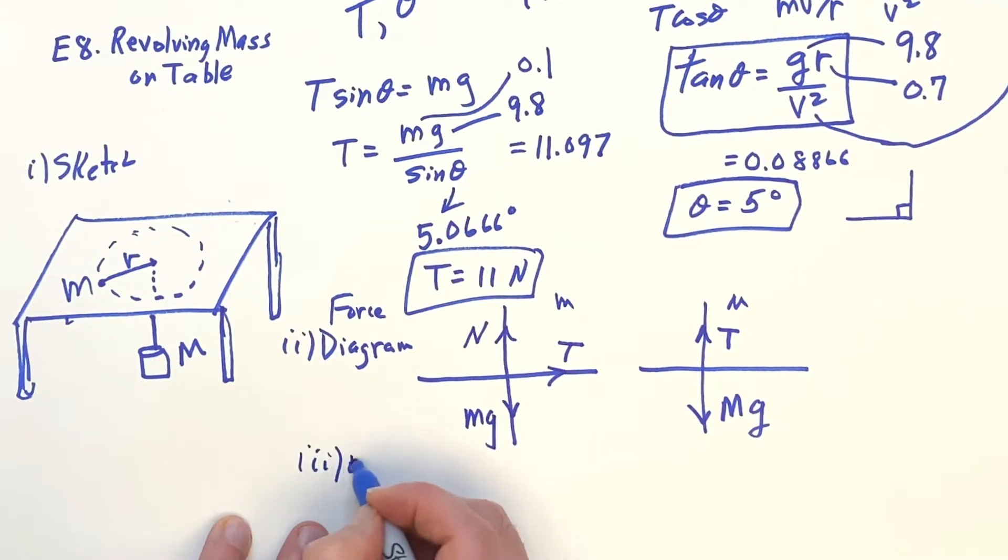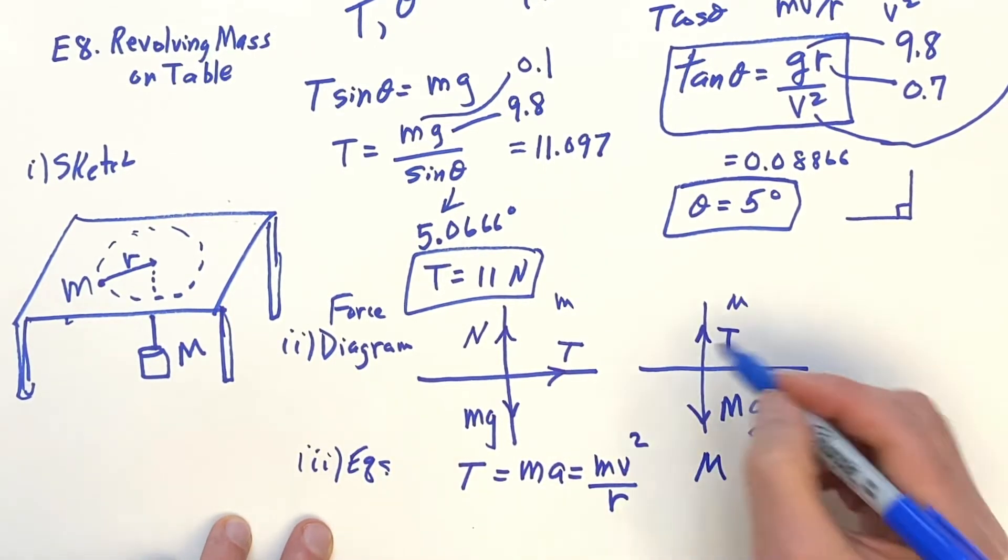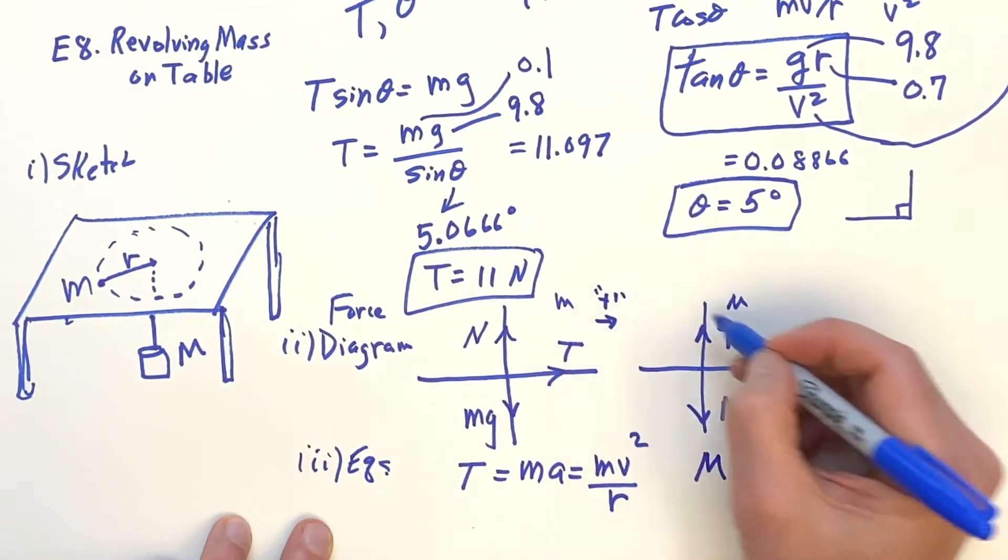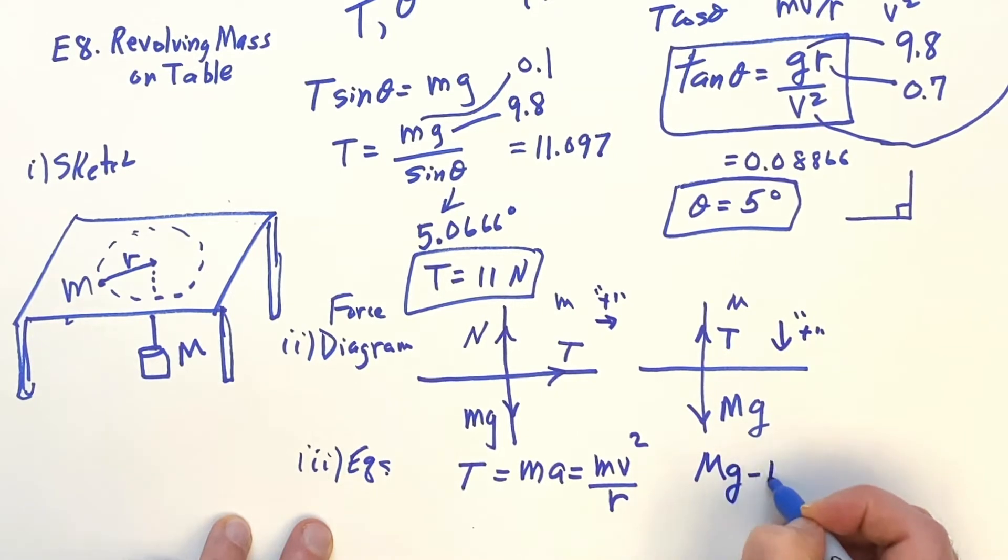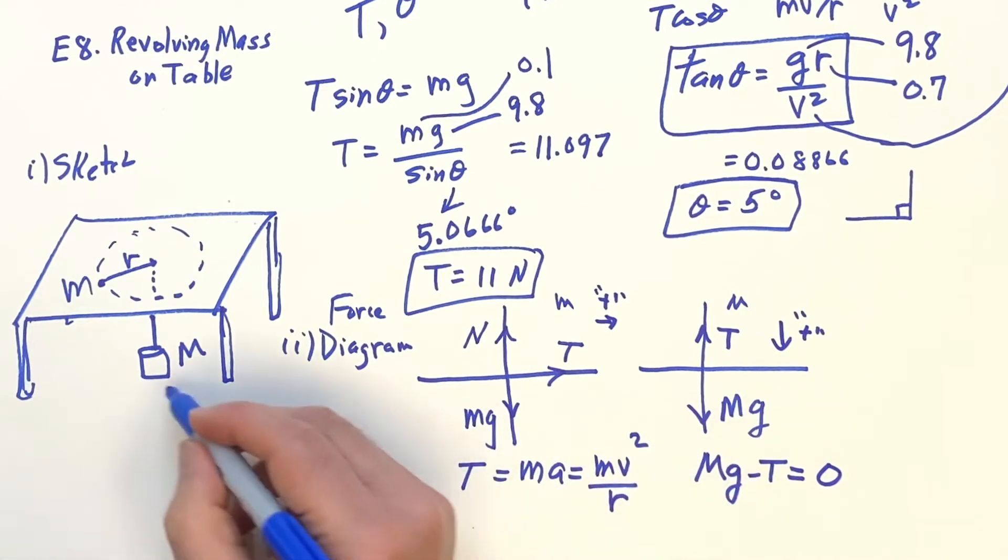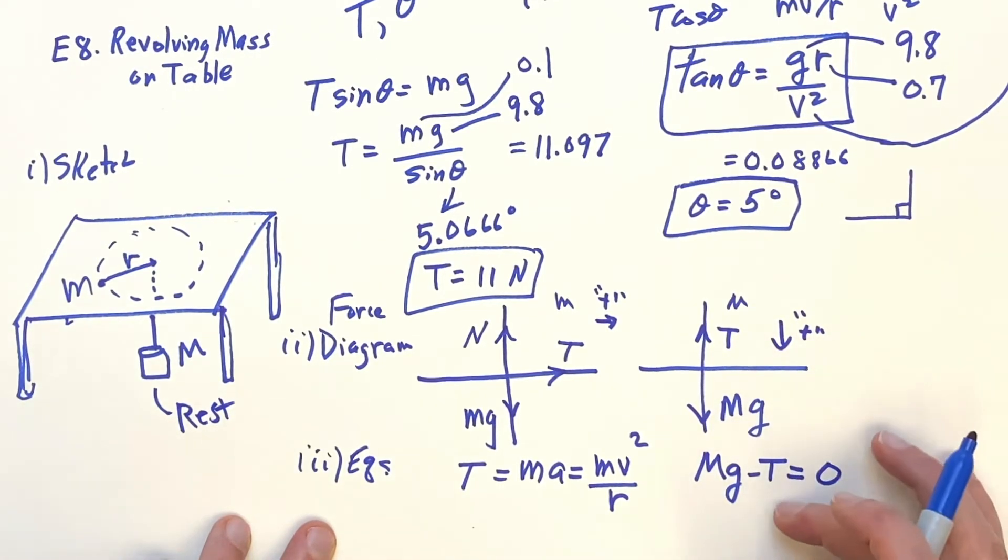as I go here to the equations, is the one with the T. T equals ma, and since it's circular motion, that's pointing toward the center. It's mv² over r. And here, to be consistent with this being positive, down is positive. So Mg minus T equals, in this case, zero, because this is at rest. So I actually do have a static situation with regard to the big mass.